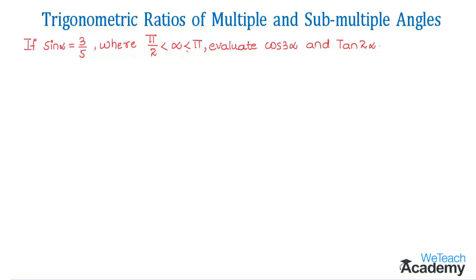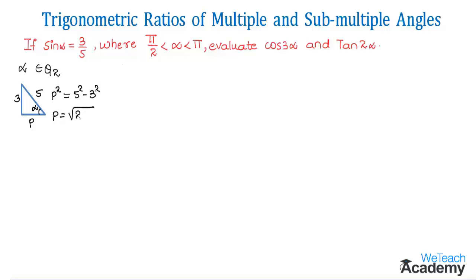Given that π/2 < α < π, this implies α belongs to the second quadrant. Since sin α = 3/5, we consider a right angle triangle where the opposite side is 3 and the hypotenuse is 5. Letting the adjacent side be p, by Pythagoras theorem: p² = 5² − 3² = 25 − 9 = 16, so p = 4.